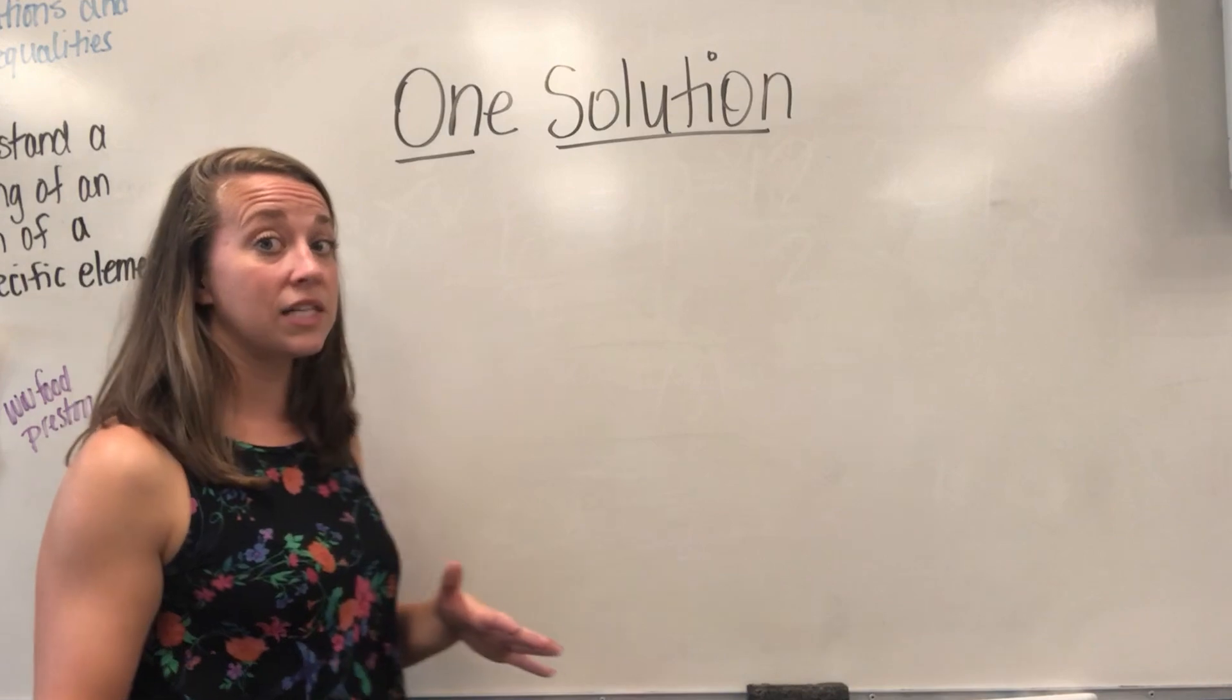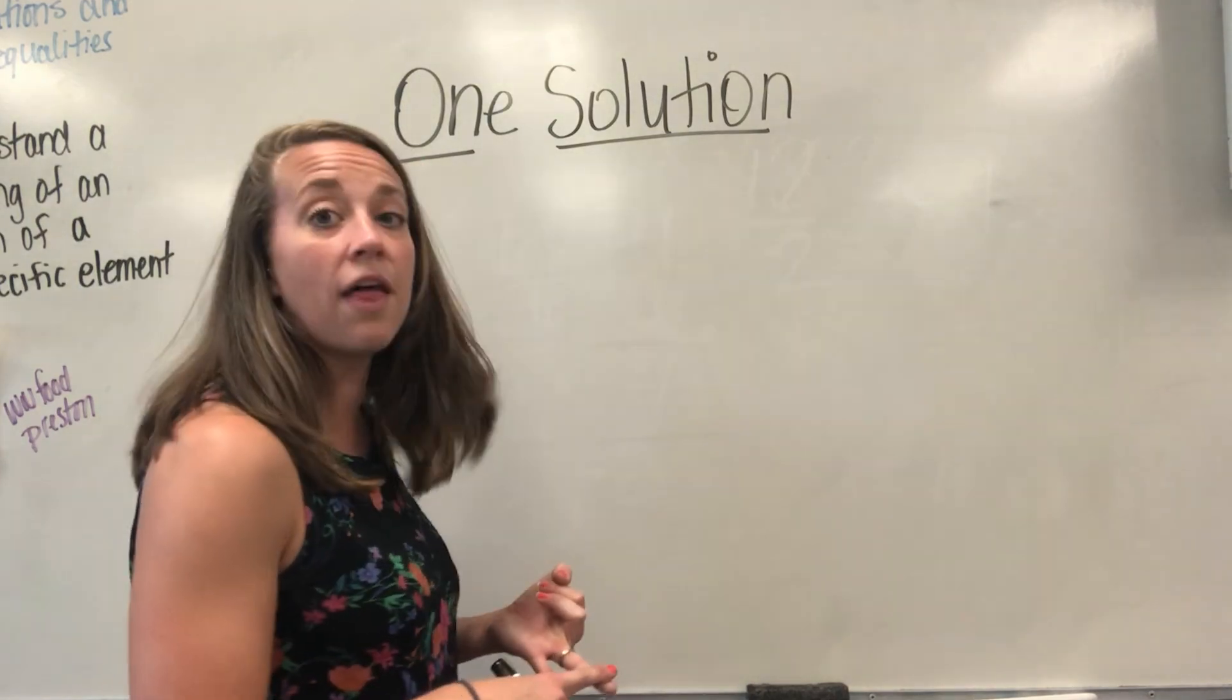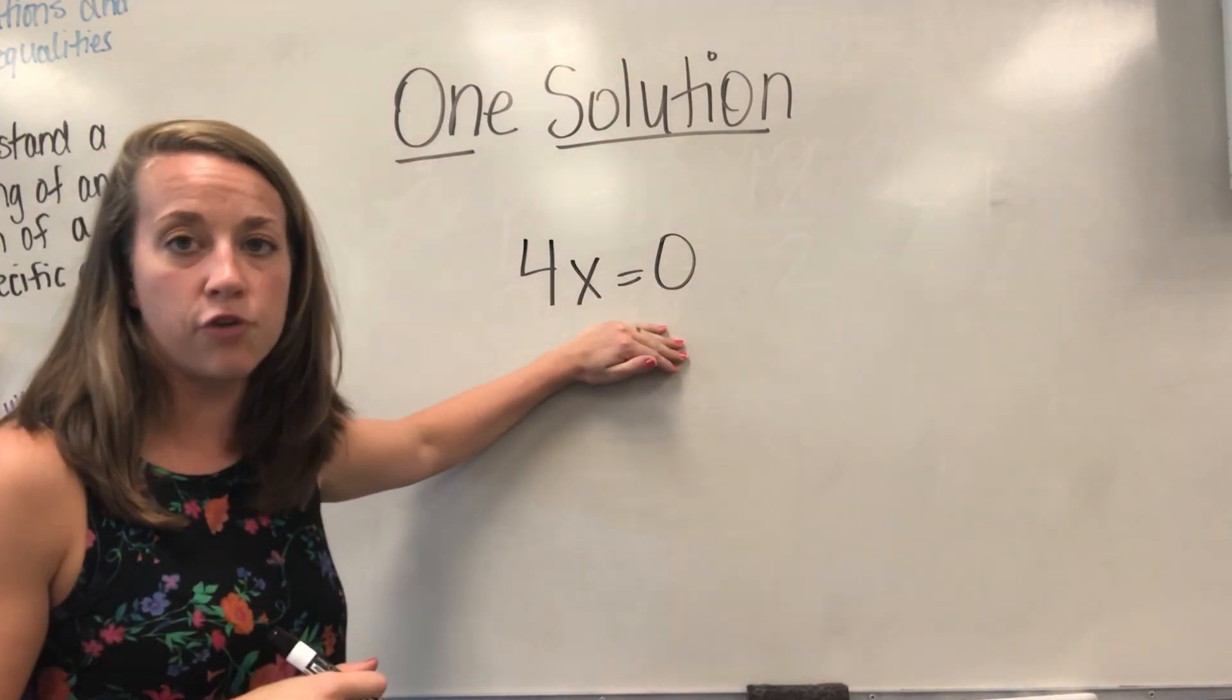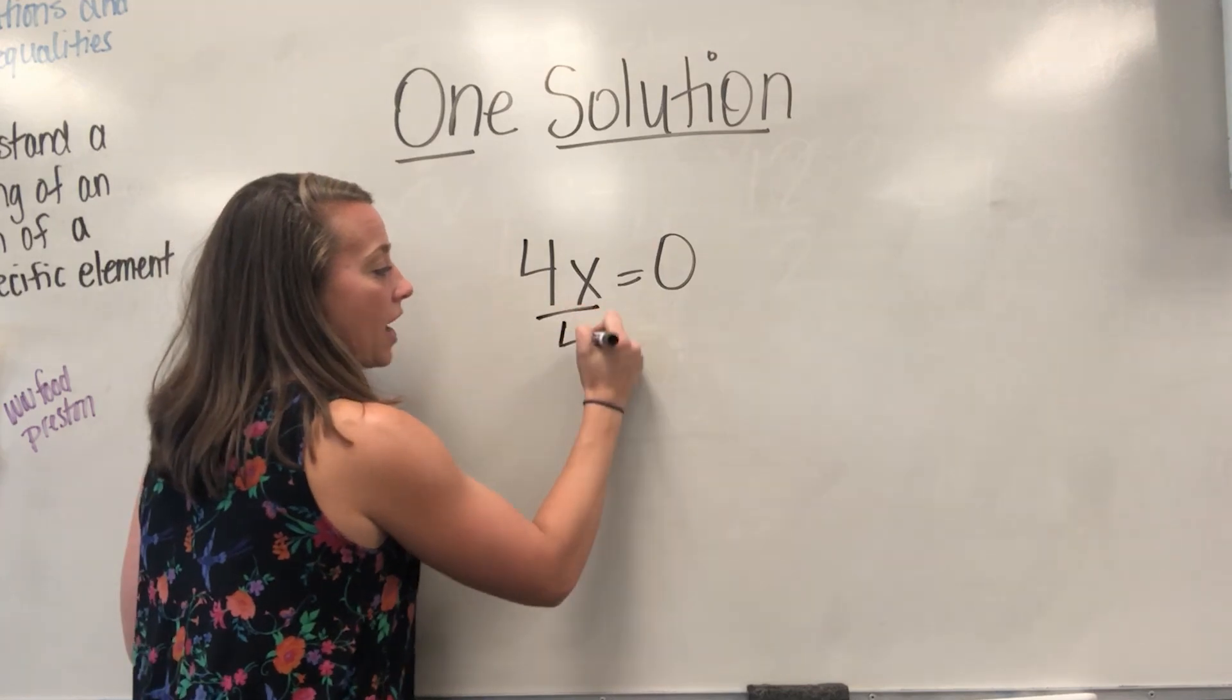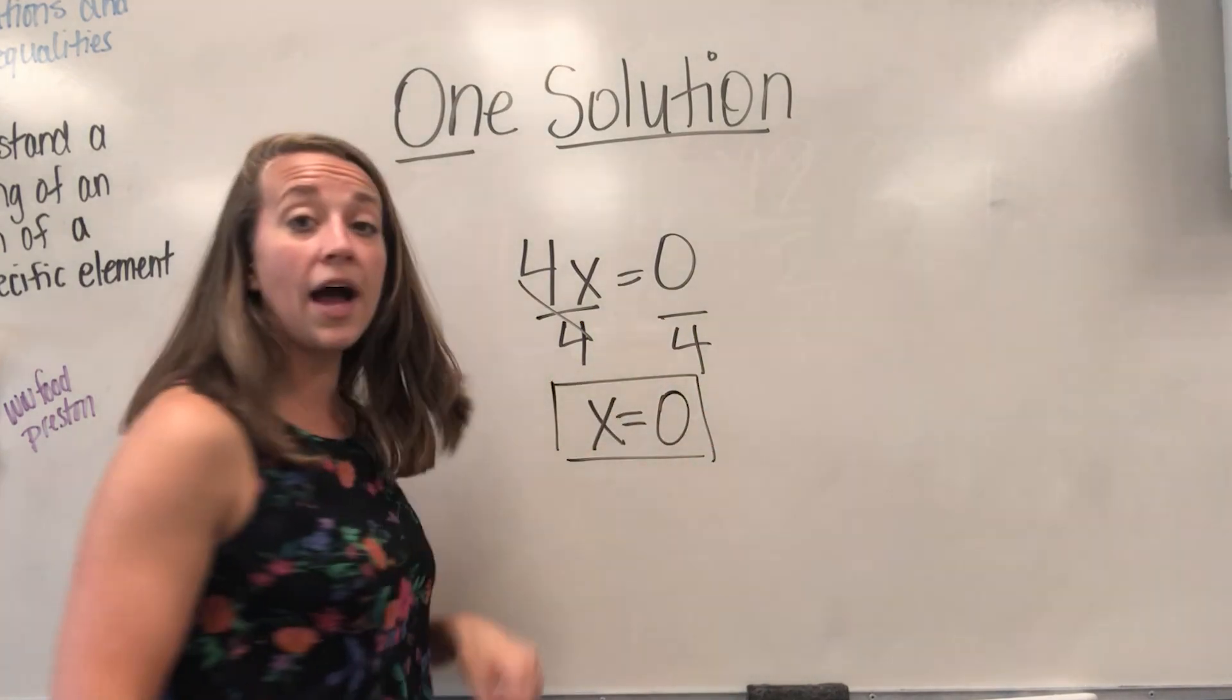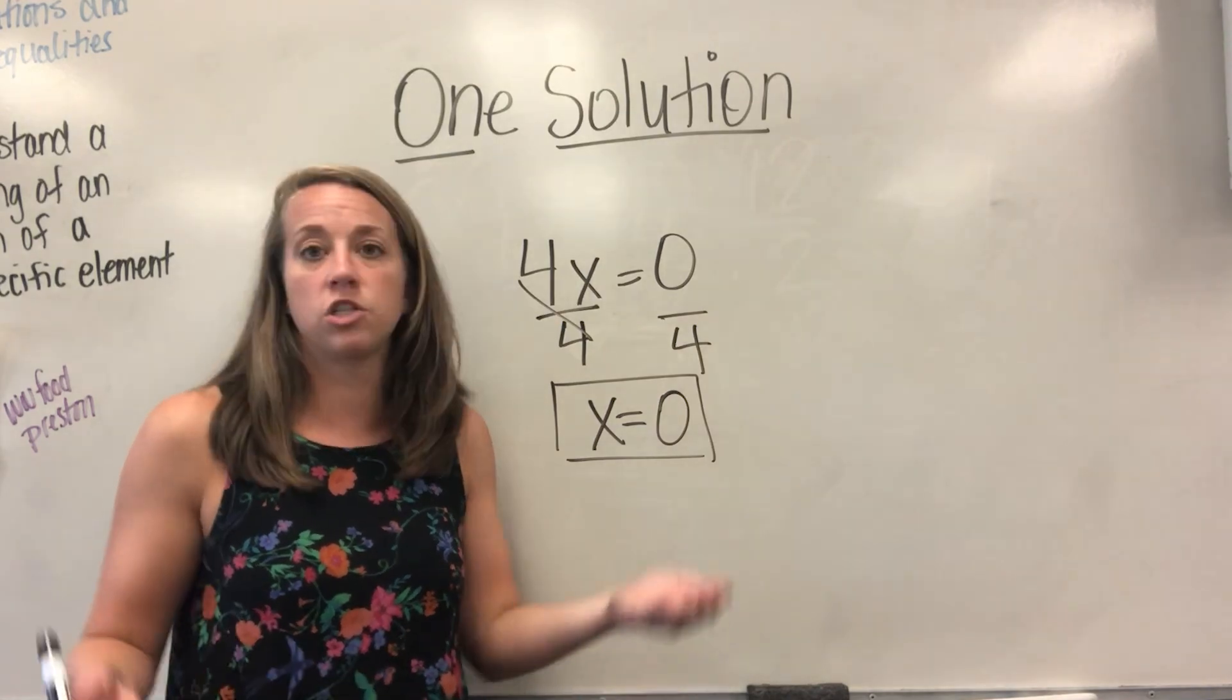Another major concern that students have is they don't think zero can be a solution, and zero is indeed a solution. Zero is a number like any other number. It can be the answer to a problem. If I had 4X equals zero, a lot of students are solving big, long problems, and they get down to this, and they freak out. Continue to solve the problem like you always would. To separate 4 times X, you would divide out the 4, and you would get X equals zero divided by 4, which is zero. That is okay. Zero can be a solution. This problem has one solution, and the one solution it has is the number zero.